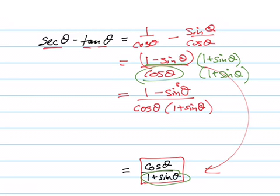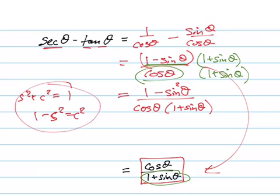Whoops, I didn't put square there. And this, if you remember, sin²θ + cos²θ equals 1, so 1 - sin²θ equals cos²θ. That means I've got cos²θ/(cos θ × (1 + sin θ)).